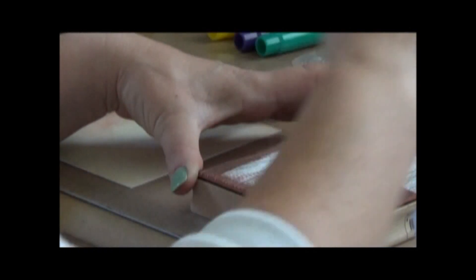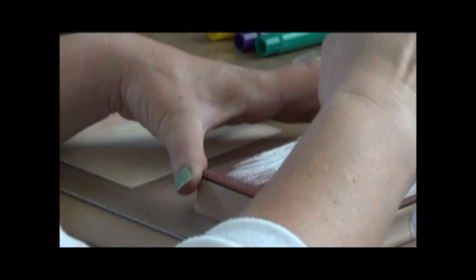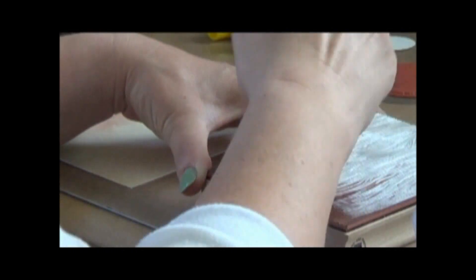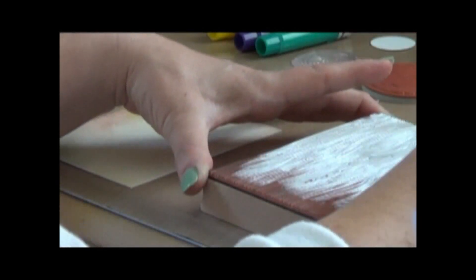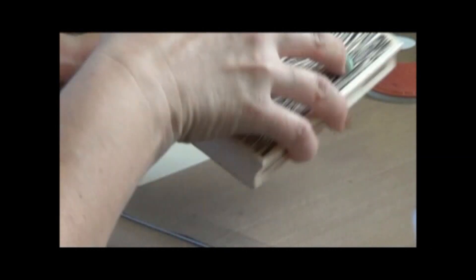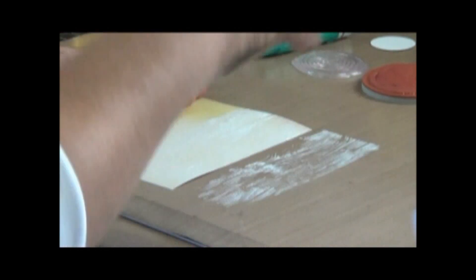So here I'm just applying the gesso to my background stamp, and you want a pretty good coverage on your background stamp, and then you're just going to stamp it onto your paper. What you don't see is that I'm going to heat up my paper after I apply the gesso. I just didn't want to do that on camera because it does get a little noisy. So here I'm just stamping it, and then afterwards I am going to clean up my stamp really well, but I spend a lot of time on that, so you don't want to see that on camera.